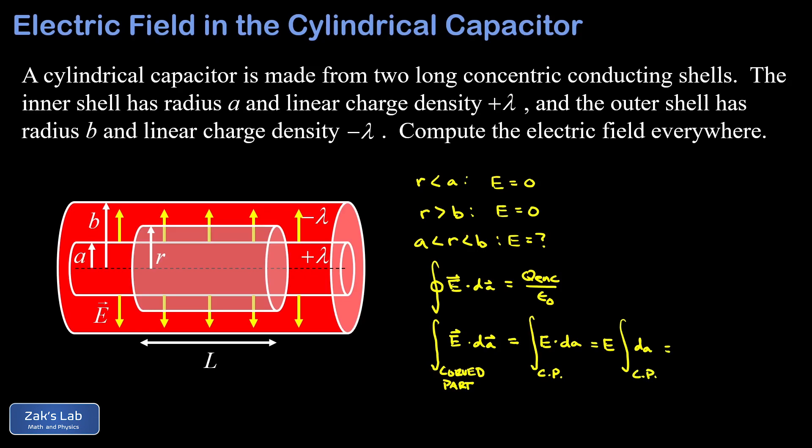We imagine cutting that curved surface and unrolling it. One side of it is going to have a length of 2πr, that's the circumference of the cylinder, and the other side has a length of capital L. So we end up with E times the area of the curved part, which is just 2πrL. So that's the result of the flux integral.